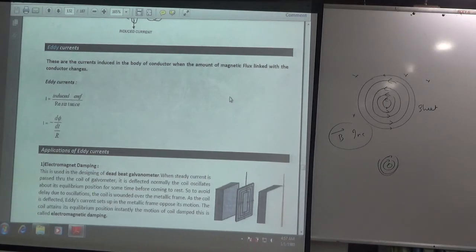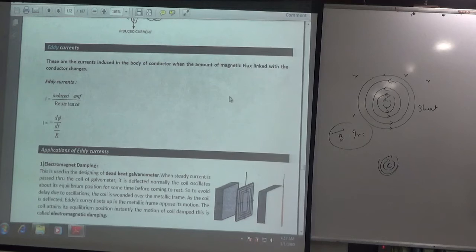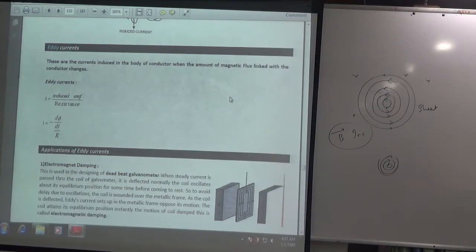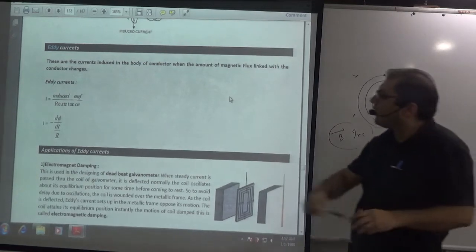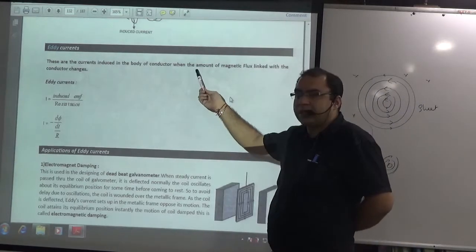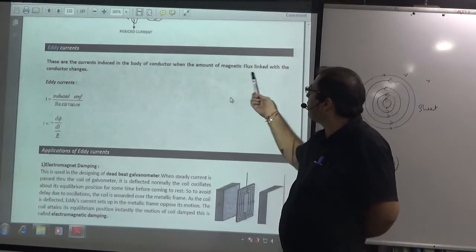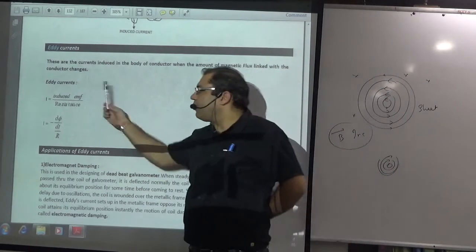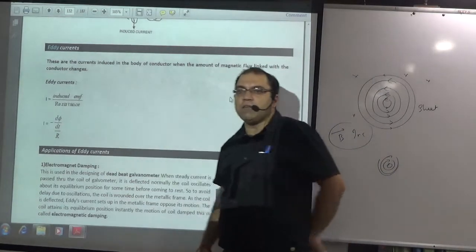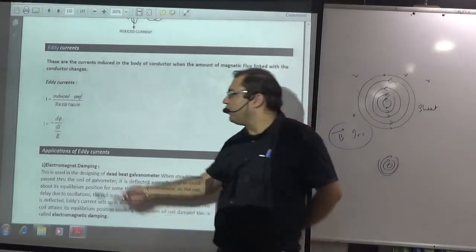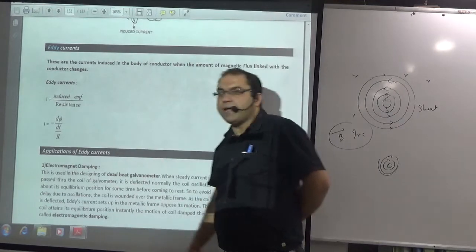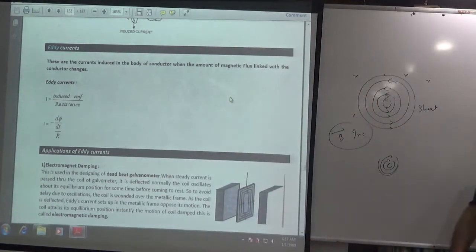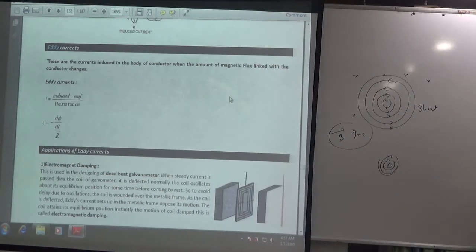They remain in a concentric form - they are induced currents, and there are many of them. So what are eddy currents? They are induced currents in the body of a conductor when the amount of magnetic flux linked with the conductor changes. The value of current will be: induced EMF divided by resistance - that is, minus dΦ/dt divided by resistance R. The rule remains the same - induced currents and eddy currents are the same.